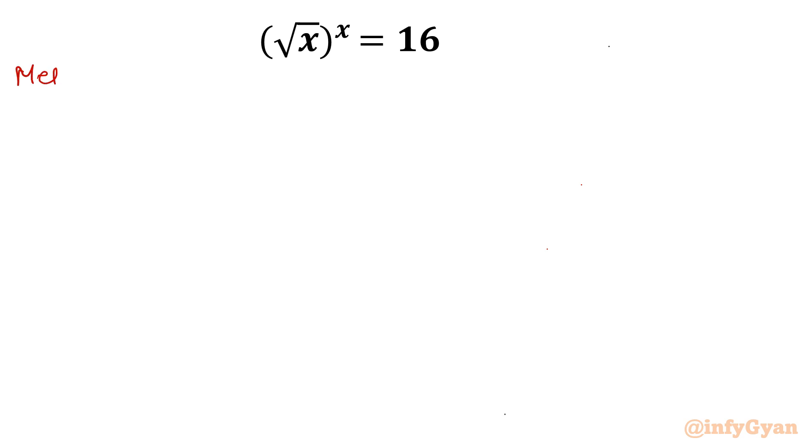So let us begin with method number one, which is using exponential. I will write square root x as x power half whole power x equal to 16. Now we know that exponent property which is a power b whole power c can be any time written as a power c whole power b, and if it is needed then we can take the product in the exponents.